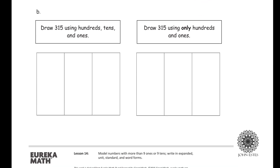Now let's look at Part B. This time it says draw 315 using hundreds, tens, and ones. So I have three hundreds, one ten, and five ones.